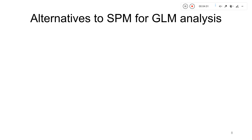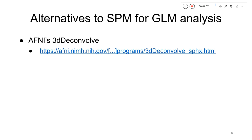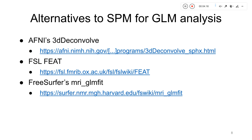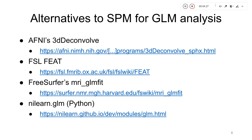There are alternatives to SPM for GLM-based analysis. If you work with AFNI or FSL, the relevant functions are 3D Convolve and Feat. For FreeSurfer, the function is called MRIGLMFIT. If you work with Python, which is becoming more common, the package NILEARN for machine learning in neuroimaging may interest you, and specifically the submodule NILEARN.GLM for GLM-based analysis.